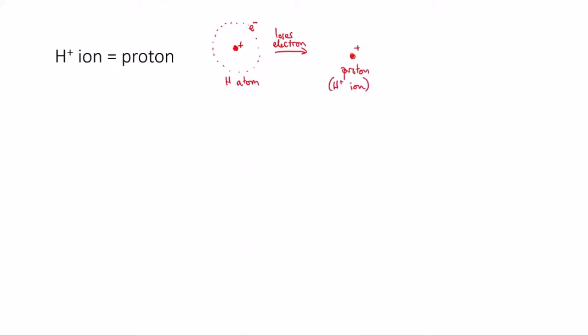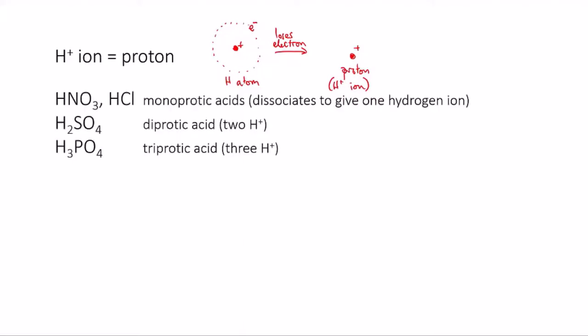This name also leads to the classification of acids as monoprotic, diprotic, or triprotic. All this means is, when the acid dissolves in water, what is the maximum number of hydrogen ions that can dissociate from one molecule? For instance, nitric acid and hydrochloric acid are both monoprotic, because when they dissociate, they release one proton or one hydrogen ion per molecule.